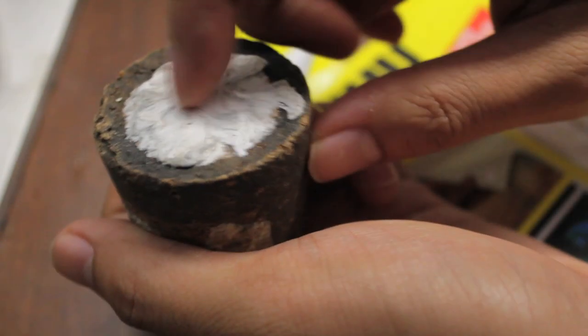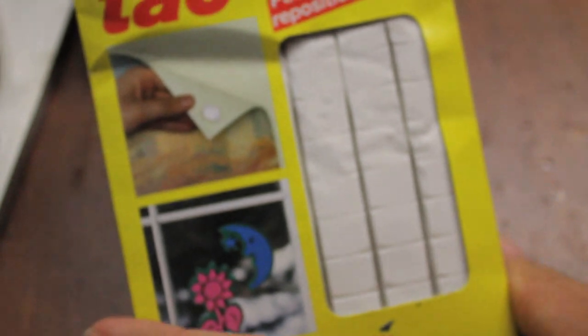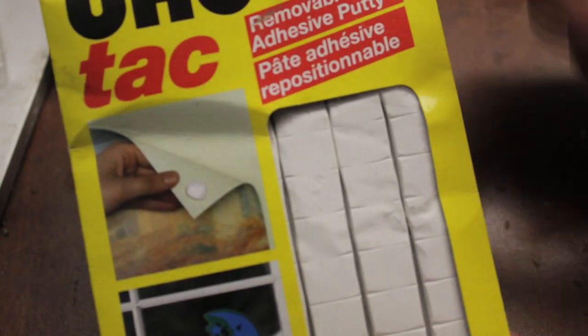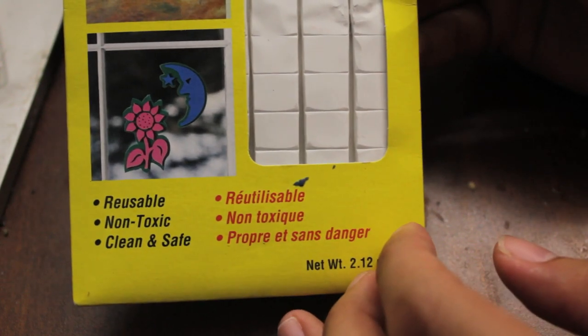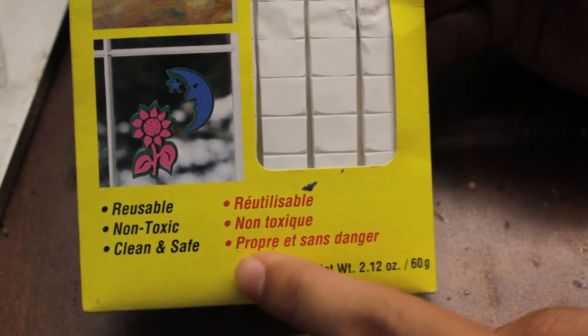Now, on top, I cleaned off the poster tack that I usually have here because I'm going to show you. This is Uhu Tack, Removable Adhesive Putty. I got it from the same store that I got the cork.